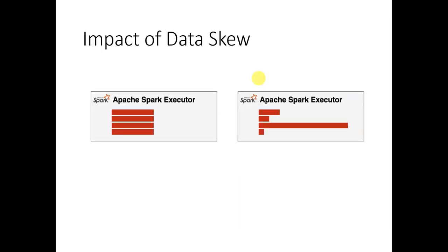Let us understand from a Spark executor perspective. When we supply evenly distributed partitions — say four partitions — the execution time from all the cores for all the tasks would be the same, and we can achieve highest parallelism. In case we supply unevenly distributed partitions where one partition is bigger compared to others, the core processing that bigger partition will take more time, and the overall execution time would be impacted.